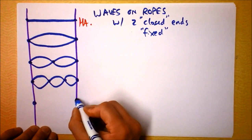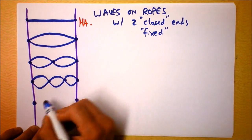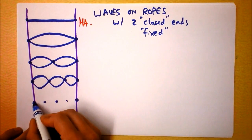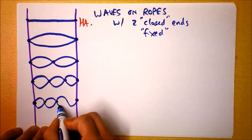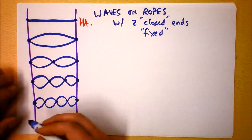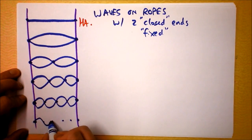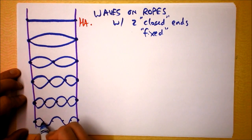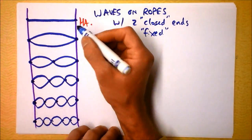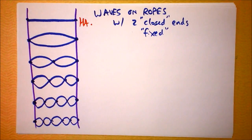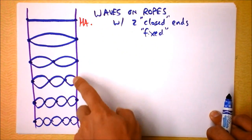The next possibility would be this kind of situation. I've got two nodes in the middle and two at the ends, so now I need three nodes in the middle — one here, one here, one here — going up and down repeatedly. Let's do one more: four nodes in the middle, going up and down across the whole length. Now let's start our analysis. This is called the first harmonic, this is the second harmonic, and this is the third harmonic.